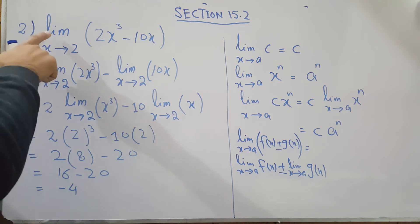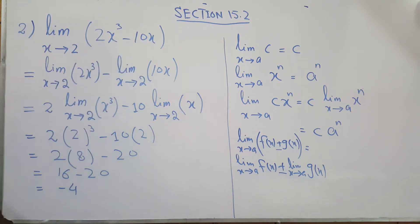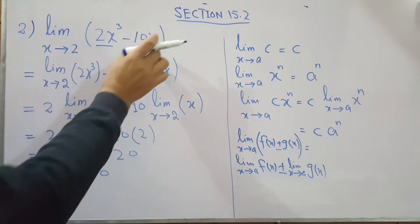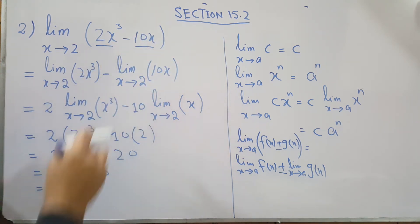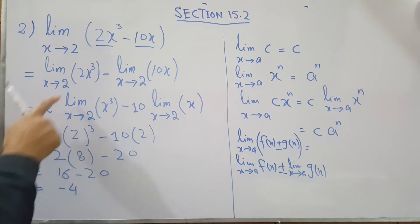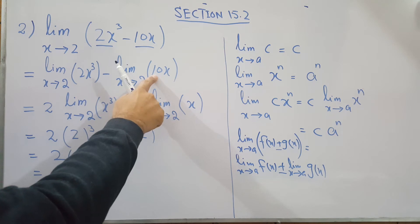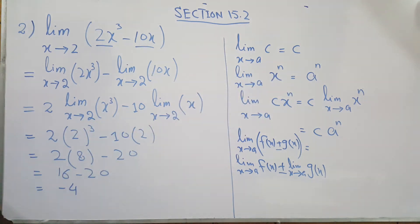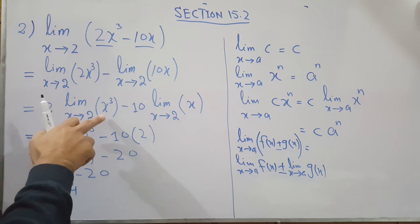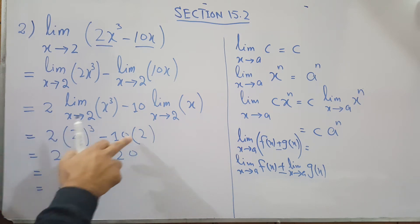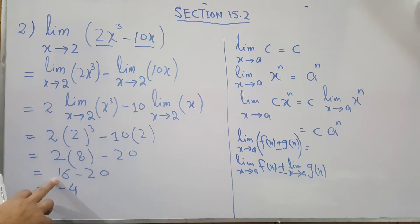In the second question, we have the limit x approaches to 2 of 2x cubed minus 10x. Applying the rules of separation, we apply the limit on each term. We take out the constant 2 and apply the limit on x cubed only; we take out 10 and apply the limit on x. Substituting x=2: 2 cubed is 8, so 2 times 8 is 16, and 10 times 2 is 20. That gives us 16 minus 20, which equals minus 4.